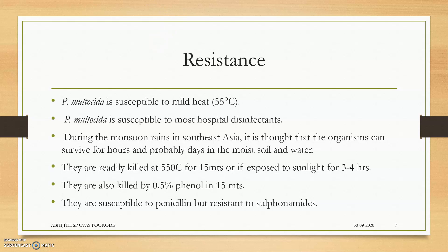Regarding resistance: Pasteurella multocida is susceptible to mild heat — treating a sample at 55 degrees Celsius will kill the bacteria. It is also susceptible to all hospital disinfectants such as phenols and Dettol. During monsoon rains in Southeast Asia, the organism can survive for hours, which plays an important epidemiological role. They are also killed by 0.5% phenol in 15 minutes.